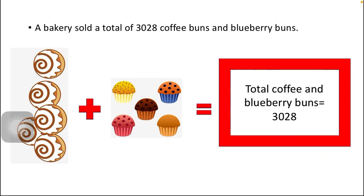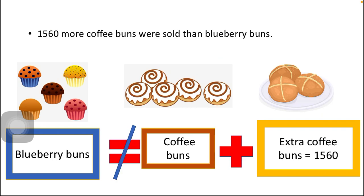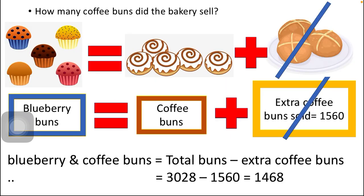Whenever I do a word problem, I separate all the statements and scrutinize them one by one. The first statement: the bakery sold a total of 3028 coffee and blueberry buns. Right now I don't know how many of each, so I've put random pictures. The second statement: 1560 more coffee buns were sold than blueberry buns, so coffee buns and blueberry buns are not equal.